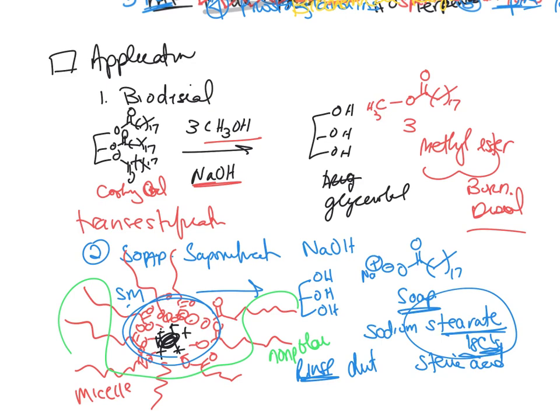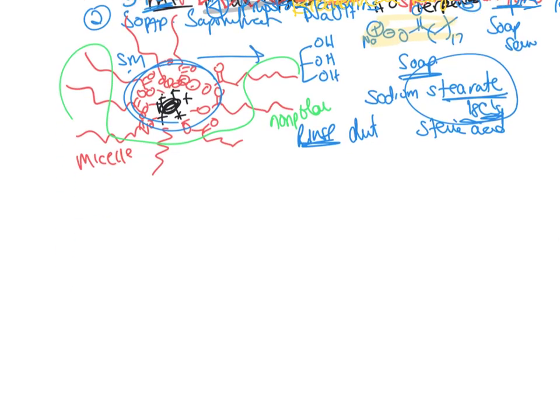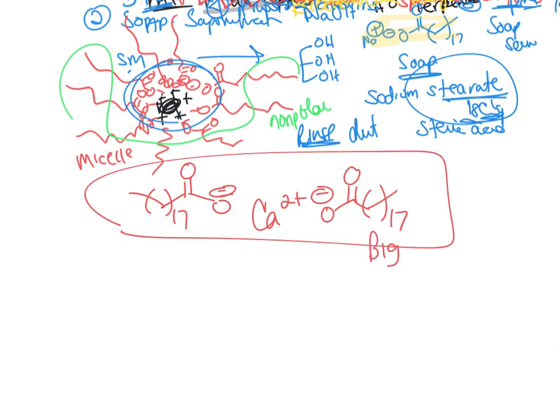Now, if you have soap scum, well that's because water gets treated at the water plant with calcium carbonate. This is limestone. And calcium carbonate forms a 2+. What happens with the calcium 2+, is it forms this structure in your bath water. So it will form the calcium 2+ and it will form two of these. And that becomes so big that it's no longer soluble. So it becomes insoluble and it will precipitate out from the water. And that's soap scum.